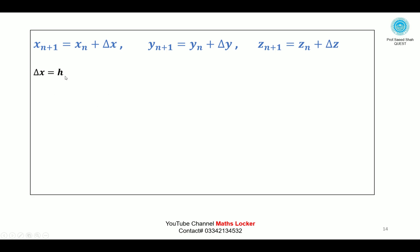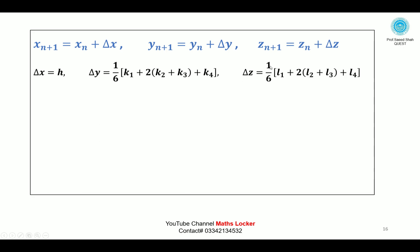Δx = h, which is the step size. Δy = (1/6)(k₁ + 2k₂ + k₃ + k₄). Δz = (1/6)(l₁ + 2l₂ + l₃ + l₄). k₁ = h·zₙ, and l₁ = h·f(xₙ, yₙ, zₙ).